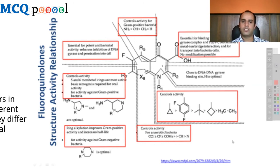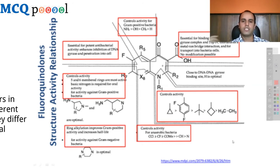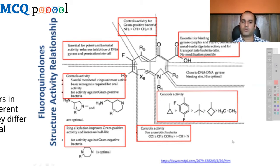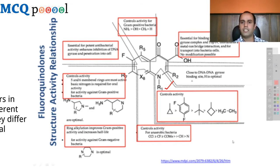This chart covers the structure-activity relationship (SAR) of fluoroquinolones. Different molecules have different spectrum effects, metabolism, and elimination — all controlled by SAR. The substitution at different positions matters: at R1, the cyclopropane molecule is most effective, while cyclobutane and the ethyl group yield lesser potency. The R2 position is close to the DNA-binding site and H is optimal there — no substitution should be made.